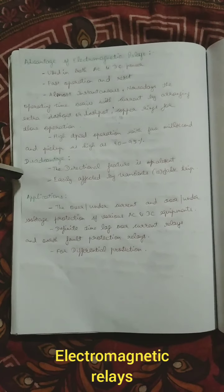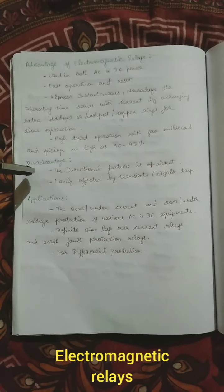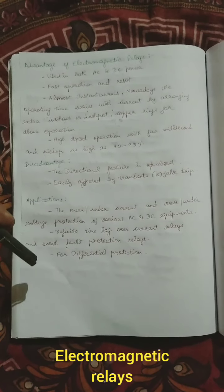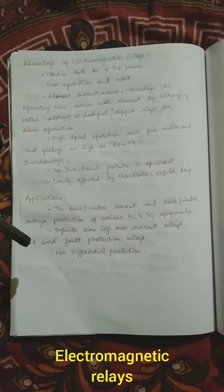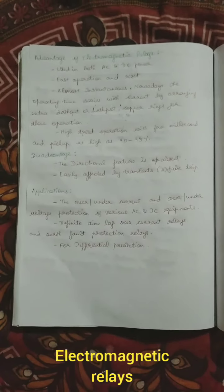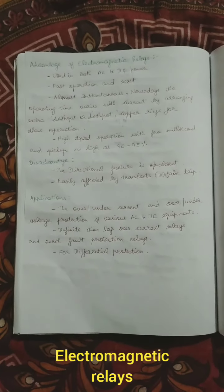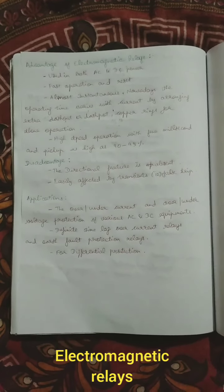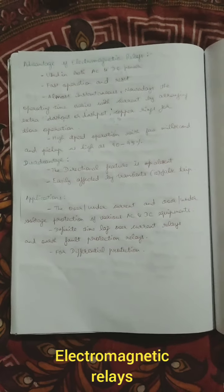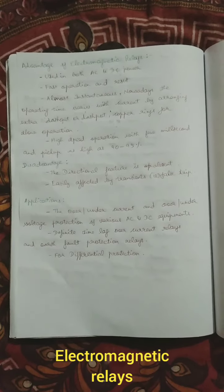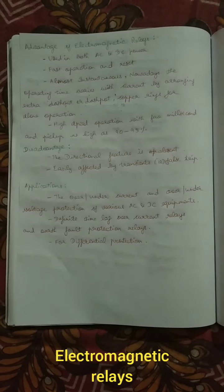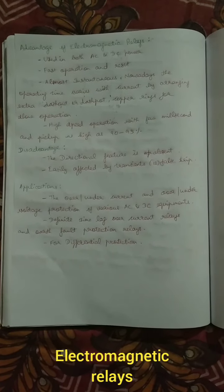The main disadvantages are: the directional feature is absent, and it is easily affected by transients. If the set value is kept at or below the fault level, tripping will be initiated even for transients. These are the main advantages, disadvantages, and applications of the electromagnetic relay.